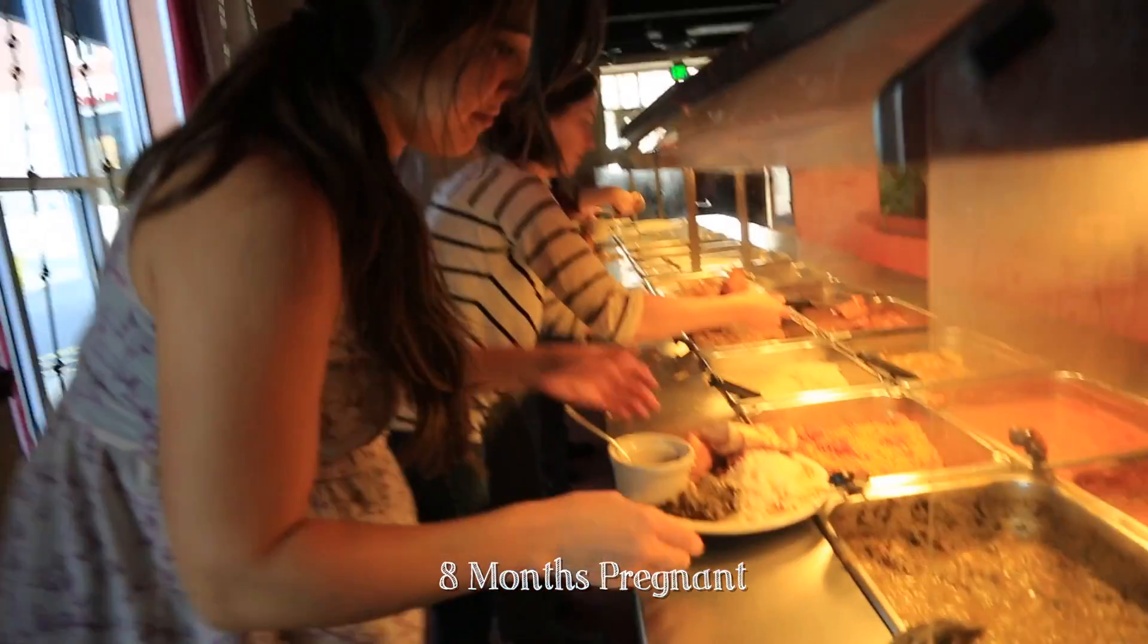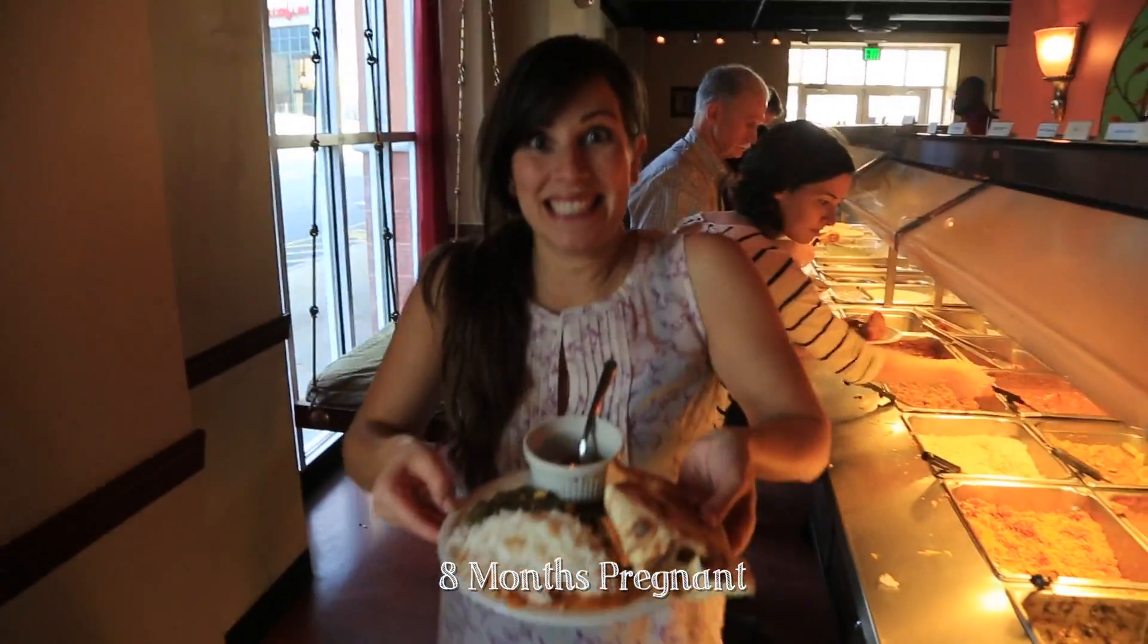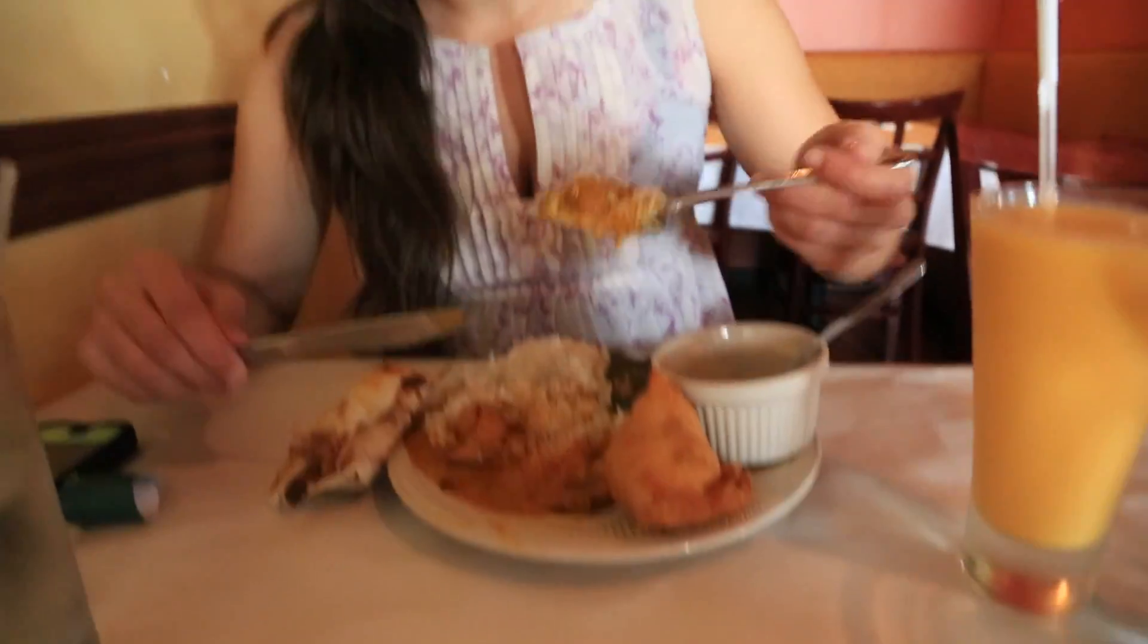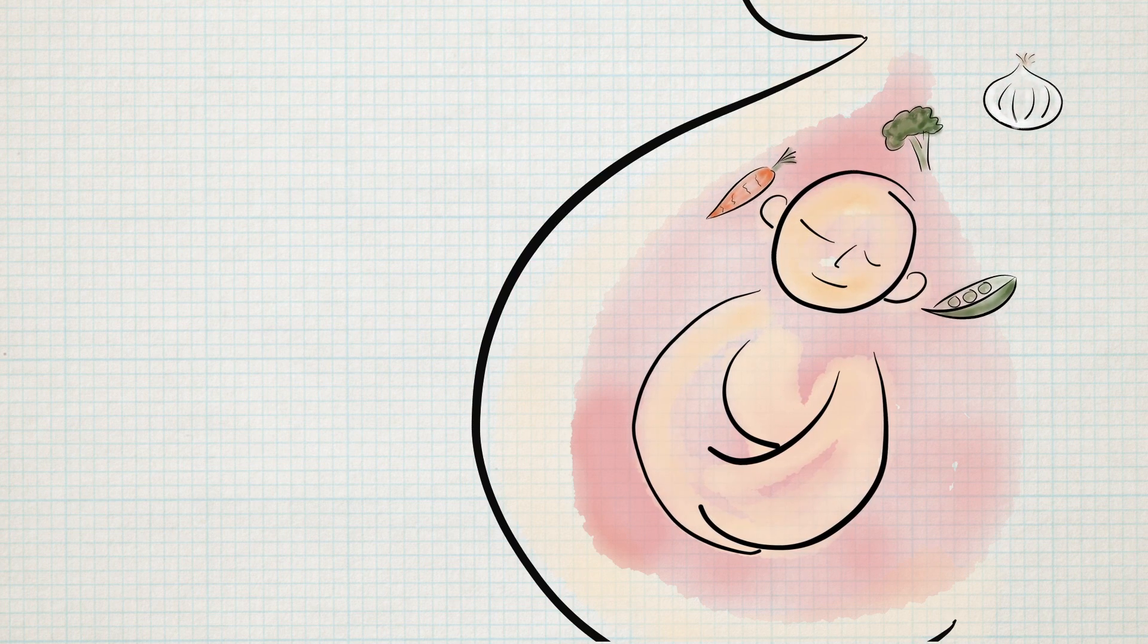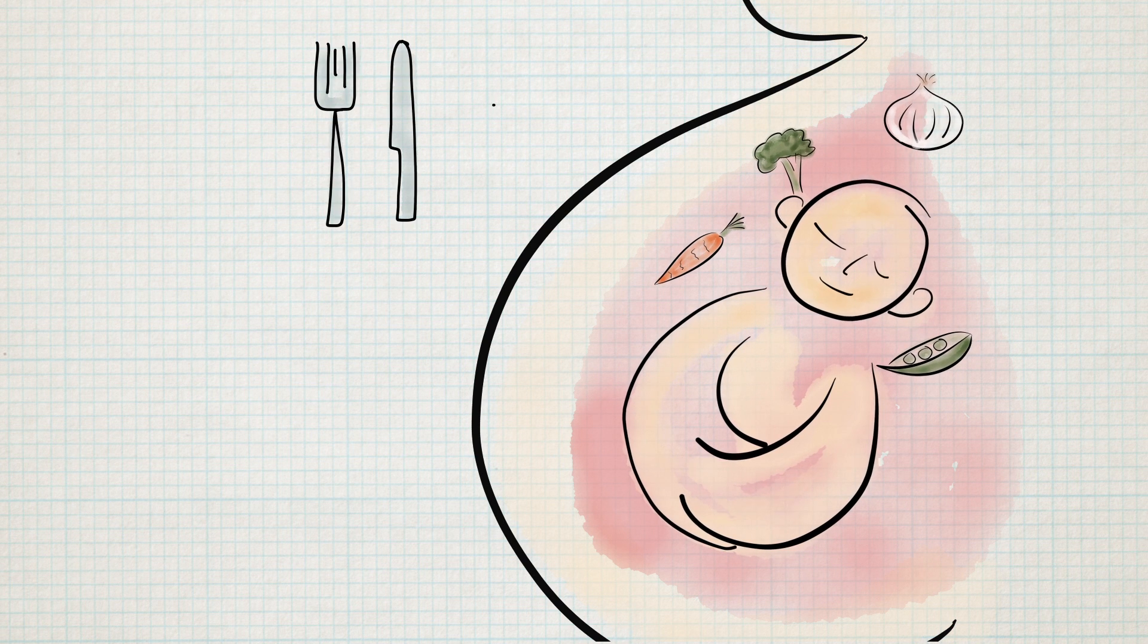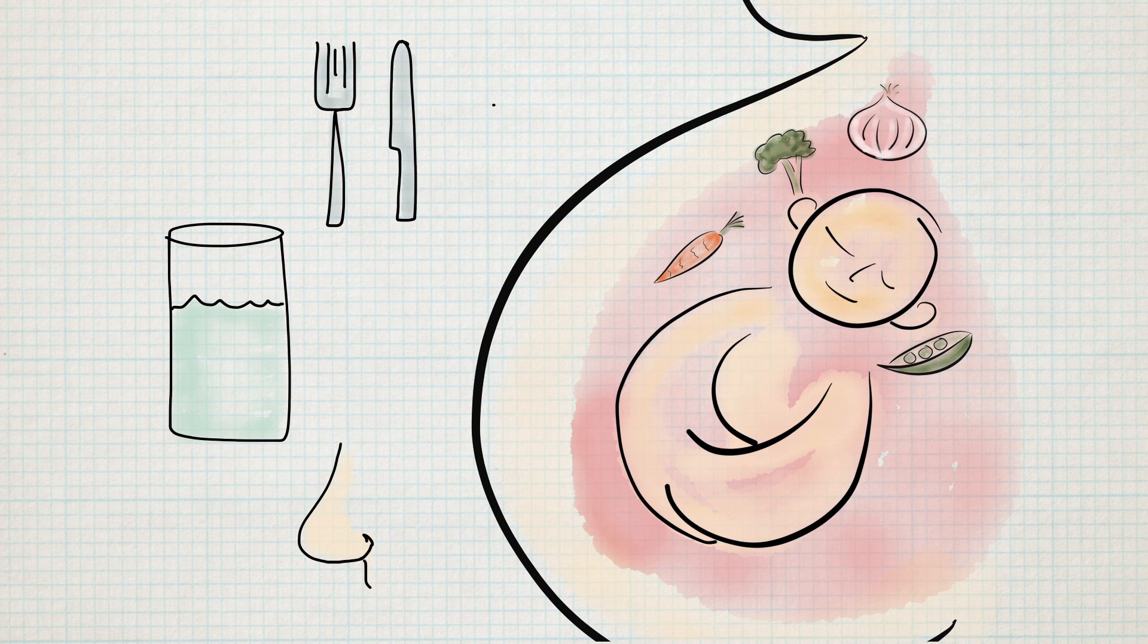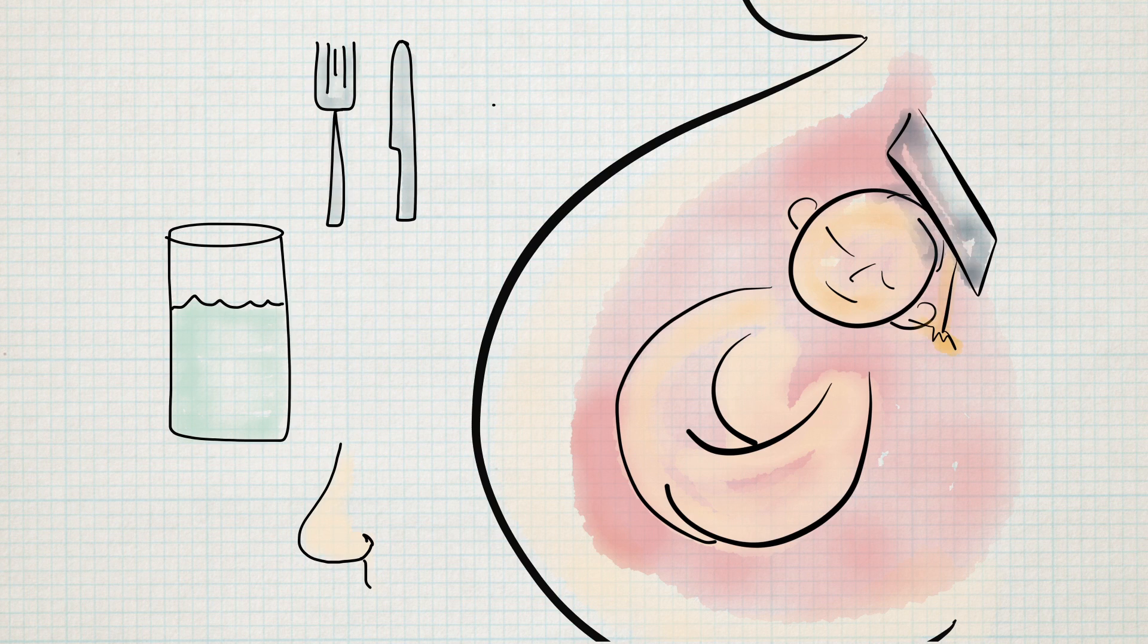Before they are even born, babies are learning about their food landscape through exposure in utero to different tastes and smells. Flavors are actually transferred from the blood supply into the amniotic fluid. Every time you eat, drink, or even smell while pregnant, you're essentially educating your baby about the food environment in which you and soon they will live.